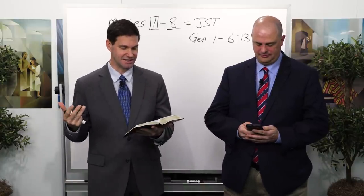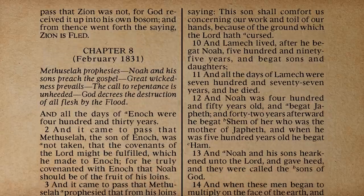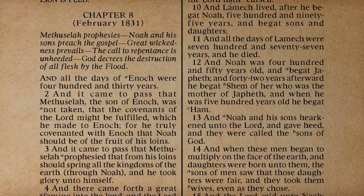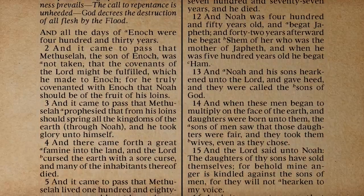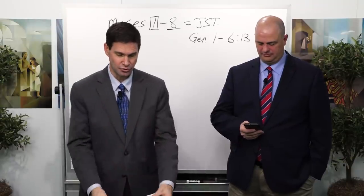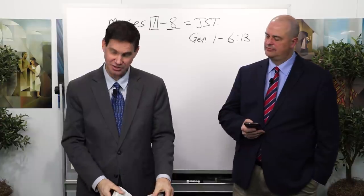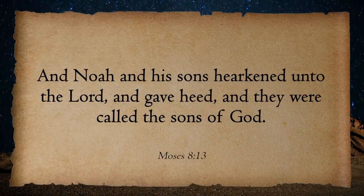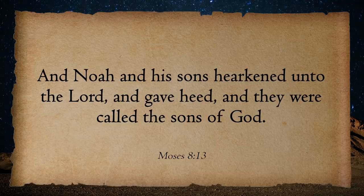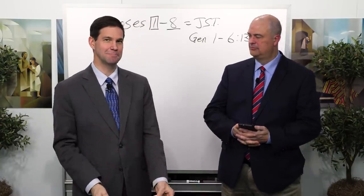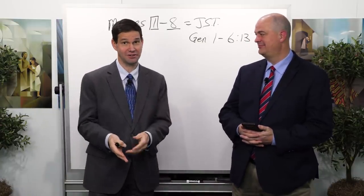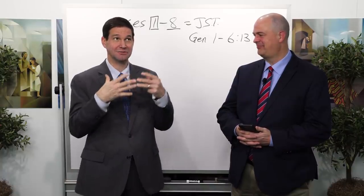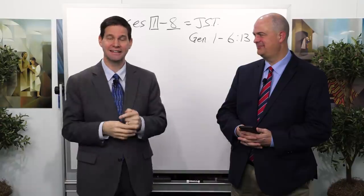Chapter 8 begins with a genealogy — from Enoch to Methuselah to Lamech and then to Noah, and from Noah it gives his sons' names in verse 12: Japheth, Shem, and Ham. The key to me is verse 13: 'And Noah and his sons hearkened unto the Lord and gave heed, and they were called the sons of God.' It's interesting that all of us are children of God, but the qualifier in the scriptures to become the sons and daughters of God seems to be that we actually give heed, we hearken to, we follow, we trust God — then we become sons of God.